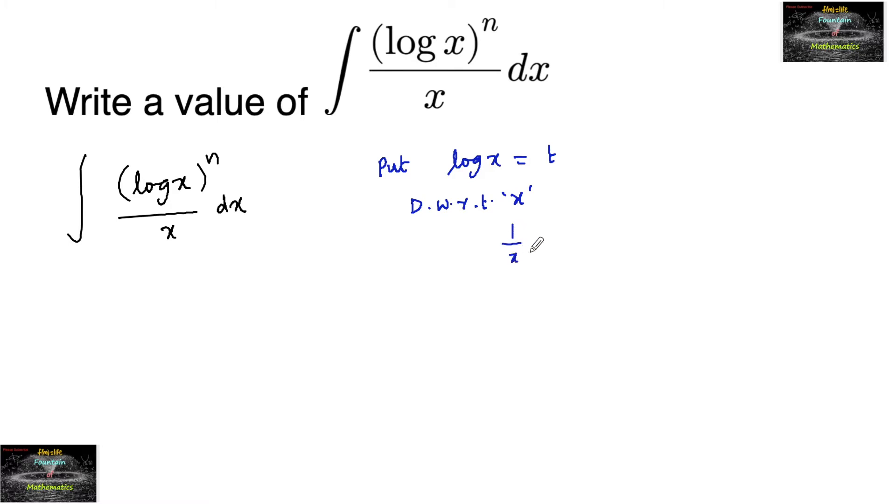we'll have 1 upon x dx equals dt. So here, 1 upon x dx is dt, and log x whole power n we can write as